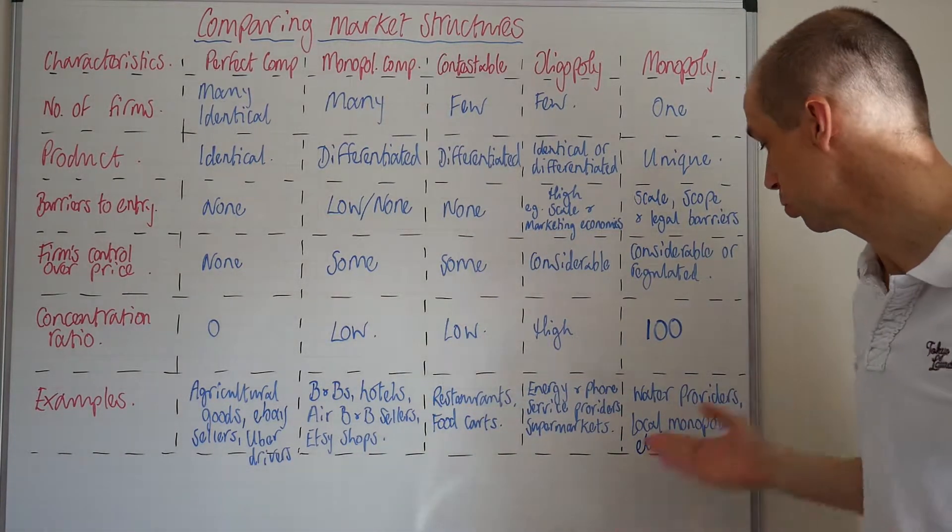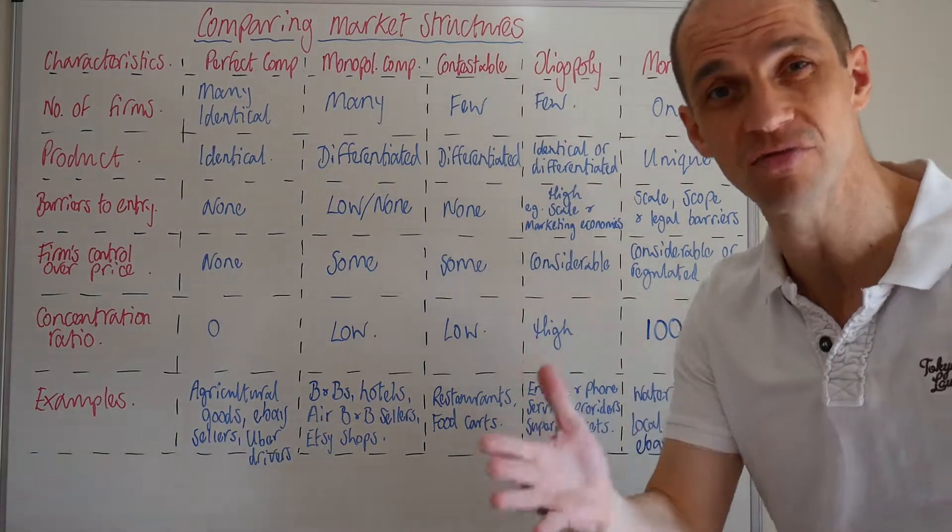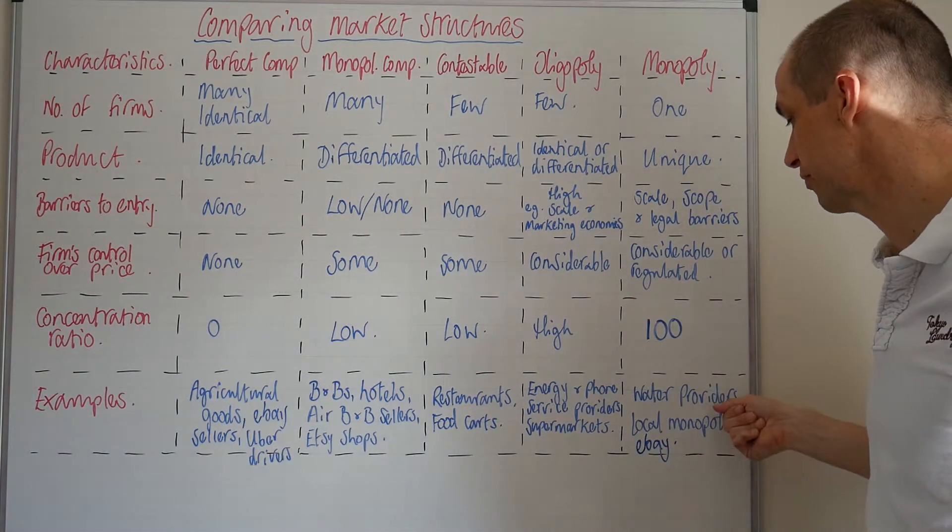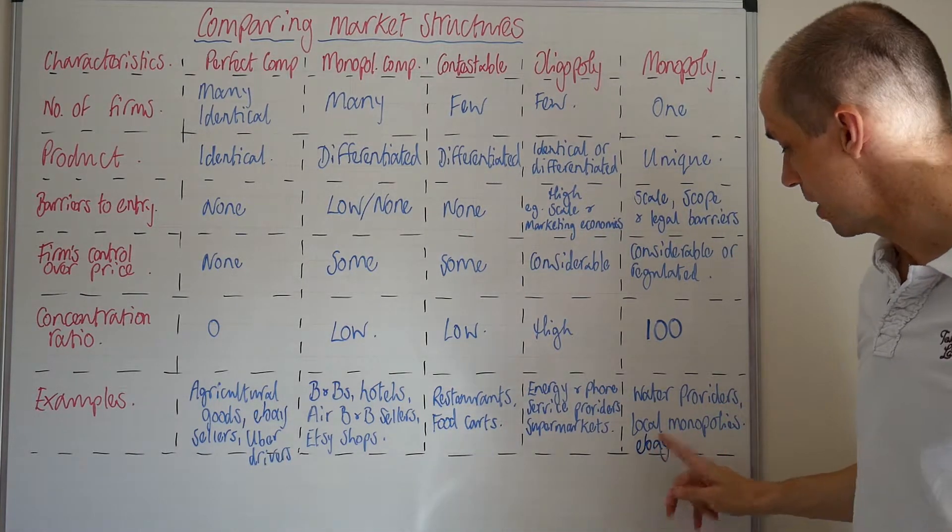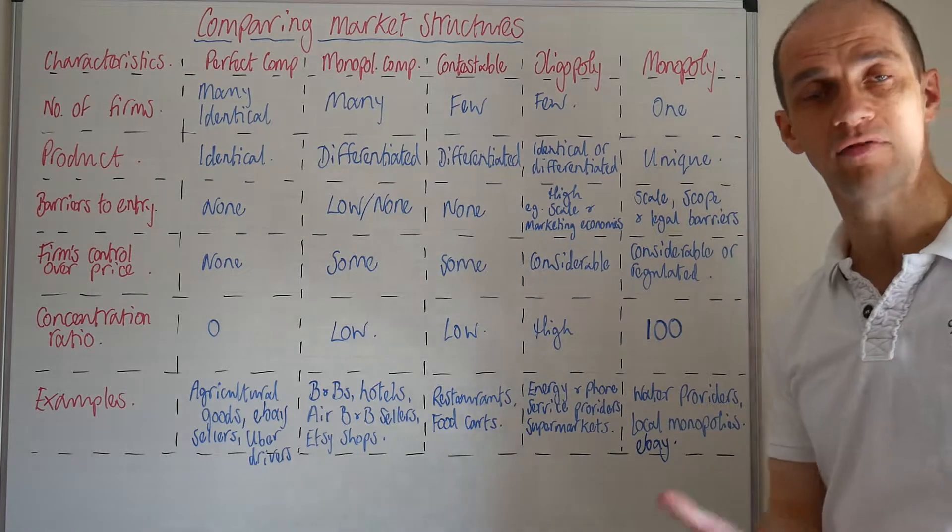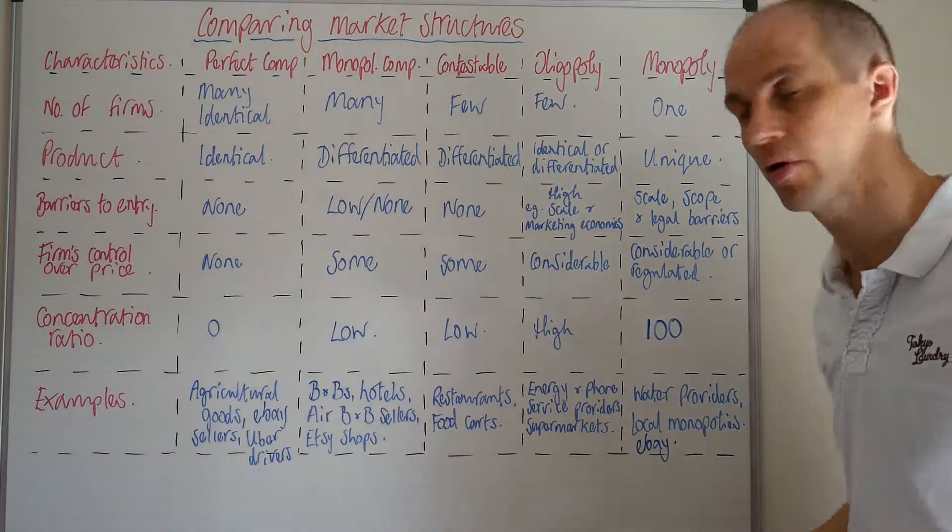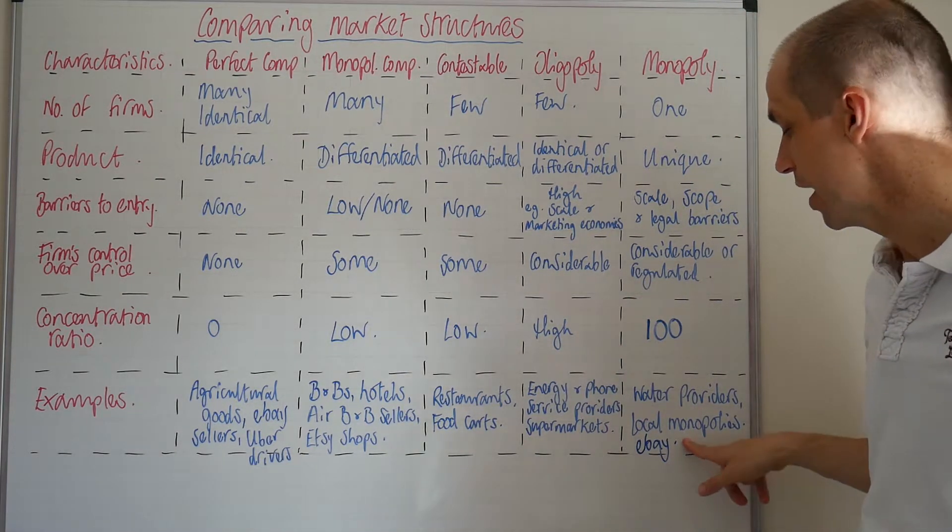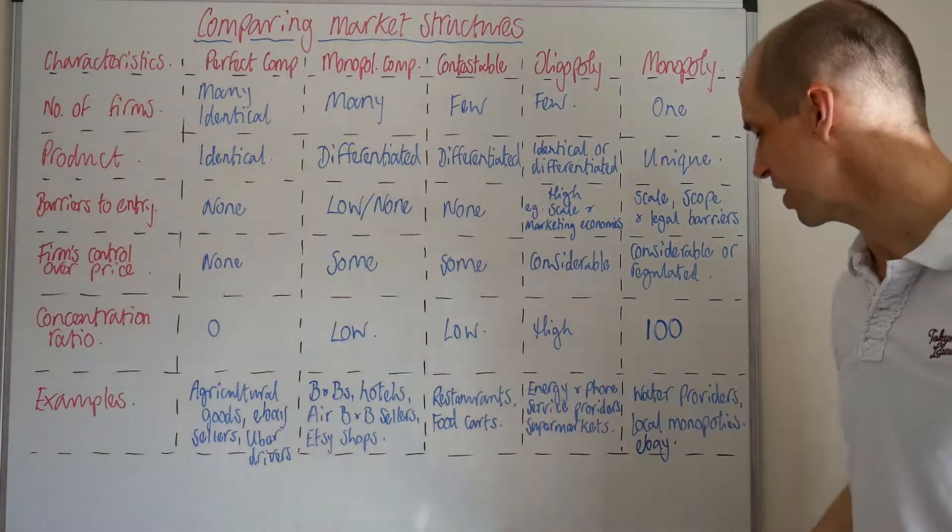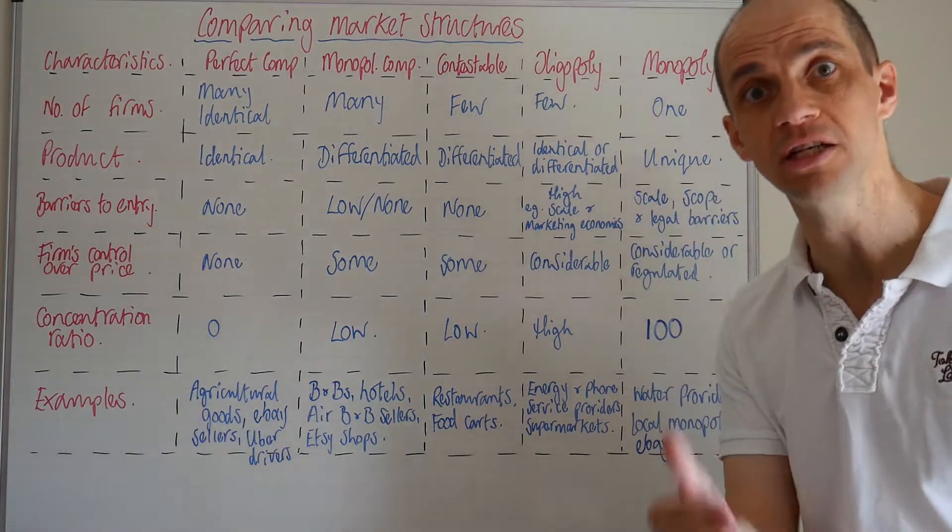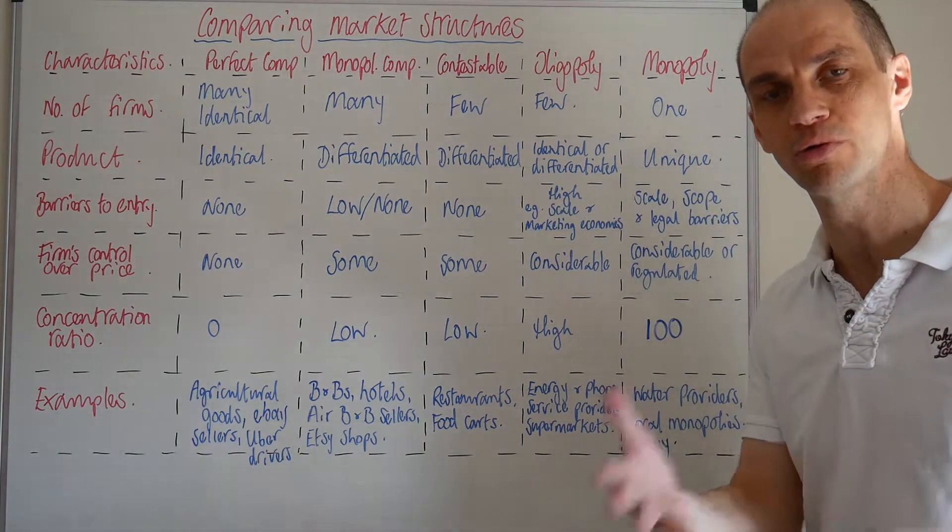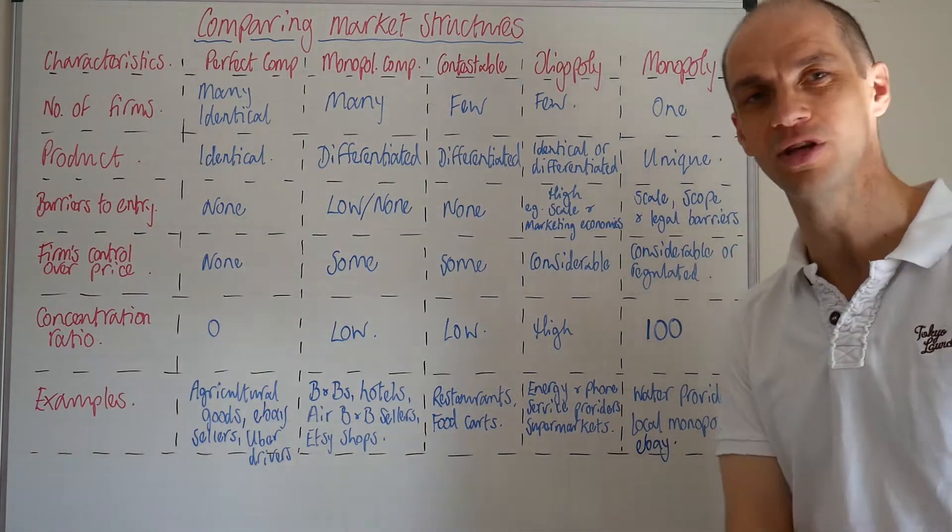So what about examples? Water providers, utility providers—you have no choice. You have to get your water from a given provider, but they do have their price regulated. Now, you might also have local monopolies, which might include local football sites, as we've said. What about eBay? Is eBay a good example? Perhaps not so much now, because you've got Facebook offering a sort of auction-based site as well, I believe.